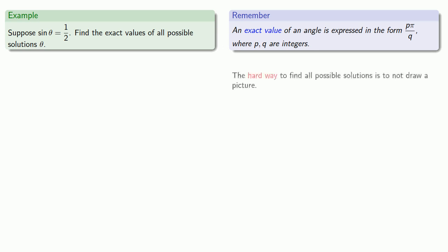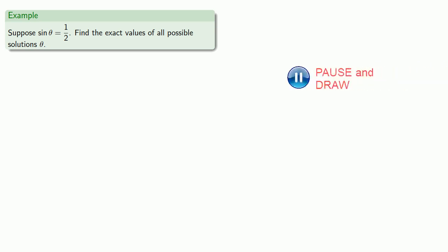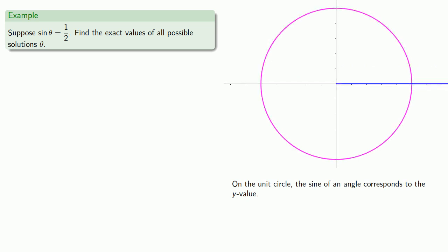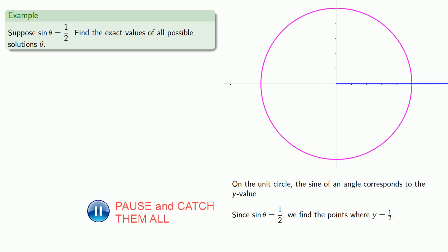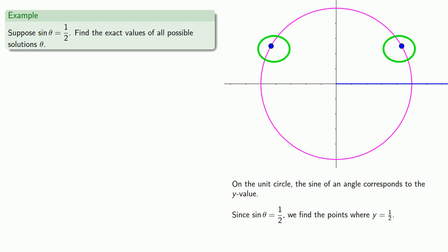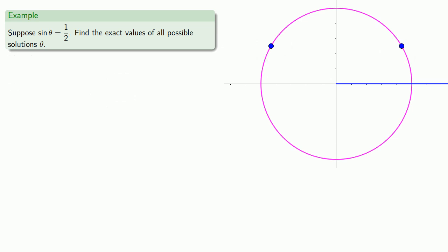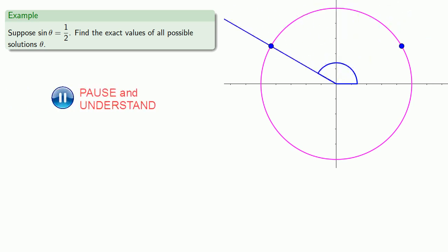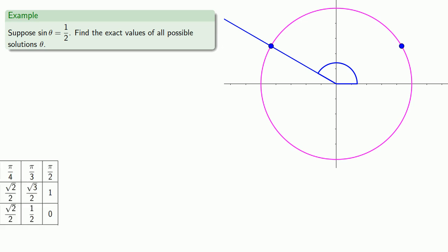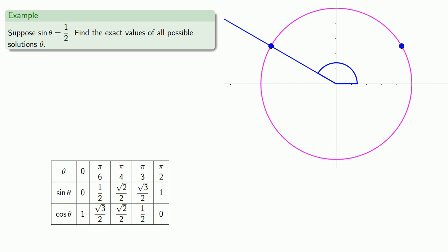The hard way to find all possible solutions is to not draw a picture — but why would you want to do things the hard way? So we'll draw a picture of the unit circle. Remember, on the unit circle, the sine of an angle corresponds to the y-value. Since we have sine = 1/2, we want to find the points where y = 1/2. There are two such points: one in the first quadrant and one in the second quadrant. In the first quadrant, we find that θ = π/6 has sine(θ) = 1/2.